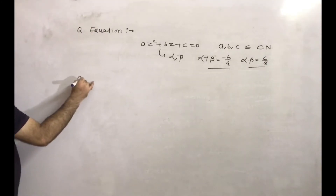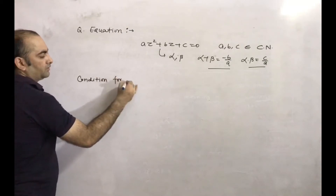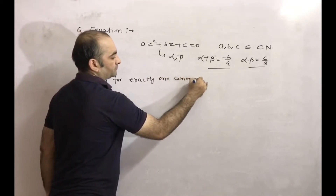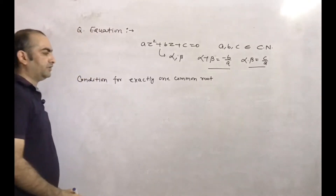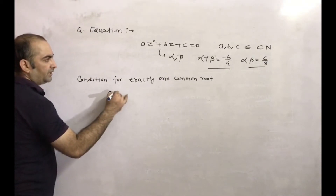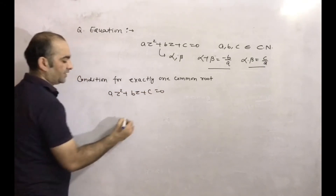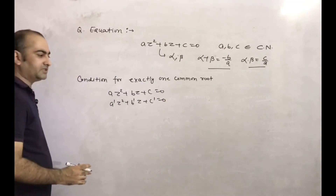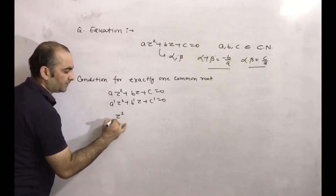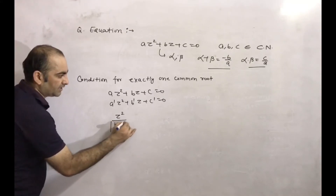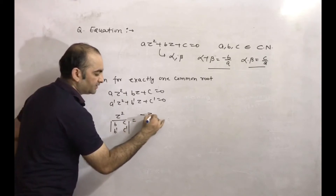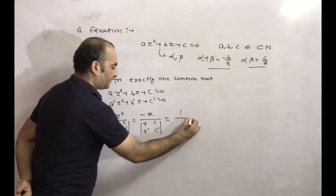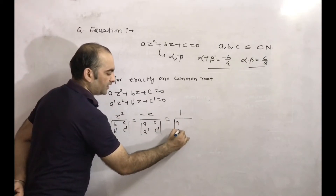Next is the condition for exactly one common root. Consider two equations: a*z² + b*z + c = 0 and a'*z² + b'*z + c' = 0. The condition comes from the relation: z² / det(b, b'; c, c') = -z / det(a, a'; c, c') = 1 / det(a, a'; b, b').